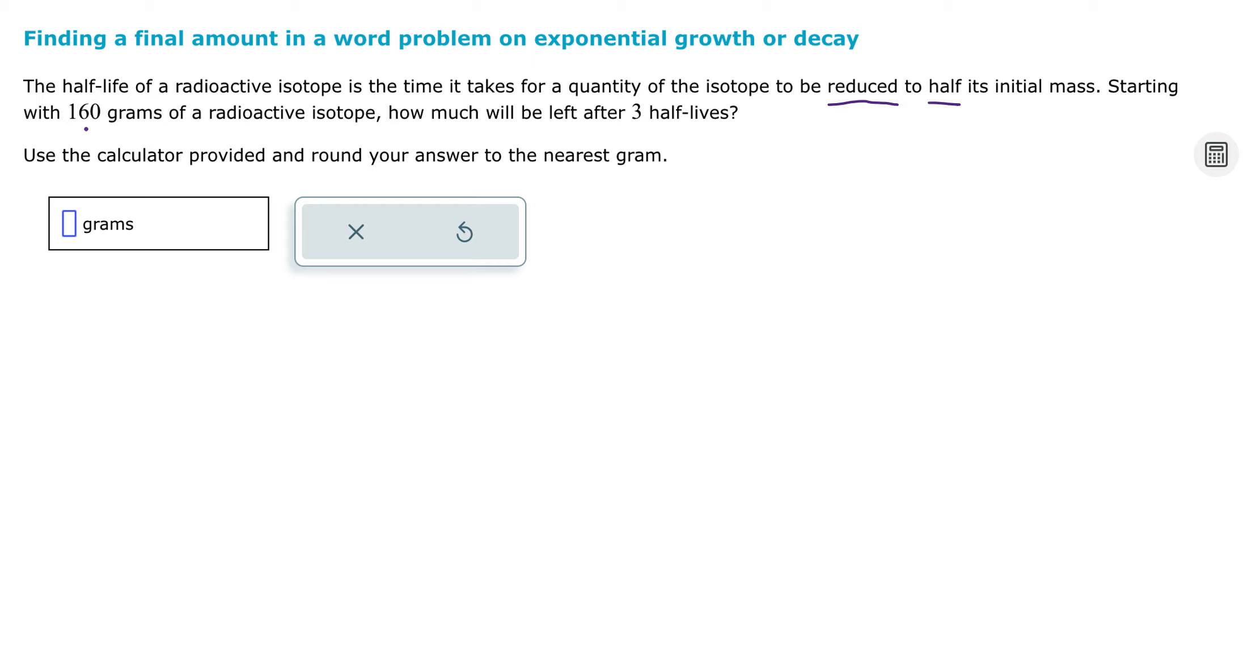So this is going to be my P, our principal amount, and this is going to be the T. Now the R here is not given as a number, it's given in word form here as half. But that's going to be 0.5 because we are reducing it by half to half of its initial amount.